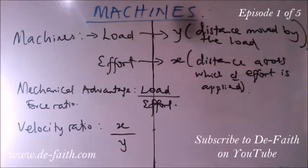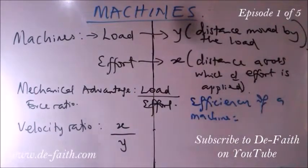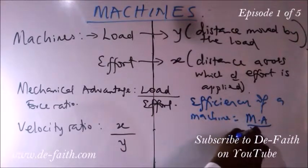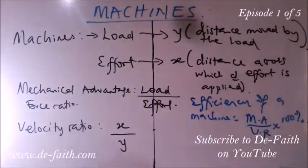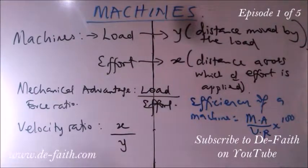We are always trying to have an advantage when using a machine — that is the mechanical advantage — and we can determine if a machine is assisting us by measuring its efficiency. The efficiency of the machine equals the mechanical advantage over the velocity ratio, times 100 percent. The mechanical advantage is usually lesser than the velocity ratio. When mechanical advantage equals the velocity ratio, the efficiency is 100 percent, meaning there is no friction, because it is friction that mostly causes the mechanical advantage to be lesser than the velocity ratio.